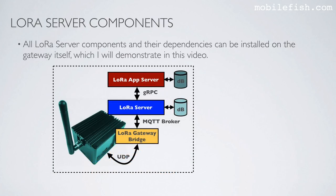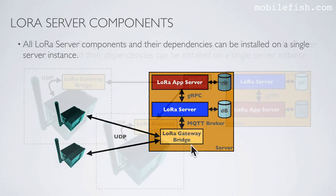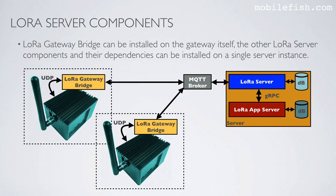Here is another configuration: all LoRaServer components and their dependencies can be installed on the gateway itself, which will be demonstrated in this video. So the LoRa Gateway Bridge, LoRaServer, and LoRaAppServer and their dependencies are all installed on the gateway. Alternatively, all components and dependencies can be installed on a single server instance. Another option: the LoRa Gateway Bridge can be installed on the gateway itself while the other components are installed on a single server instance.